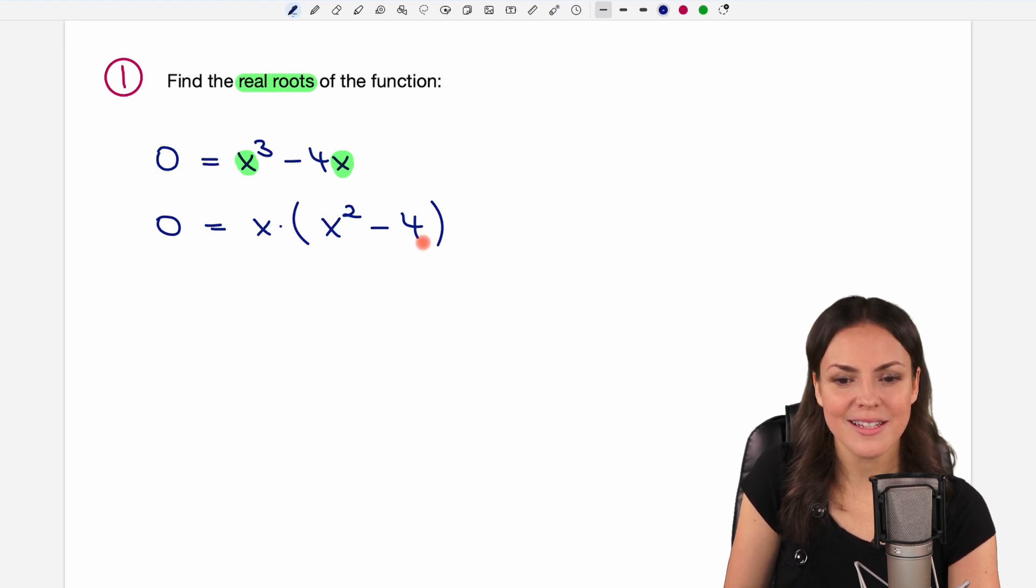Okay, how does this help us now? Well, we have a product on the right side. So we have something times something equals zero. This is a really good situation we're in. Because now we can split this product. We can say either the first part equals zero. So either x equals zero.